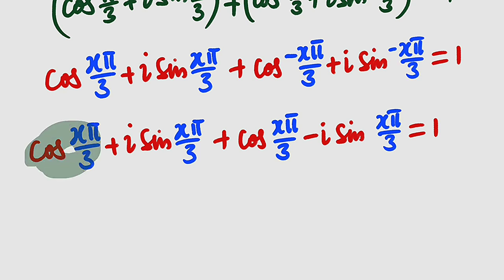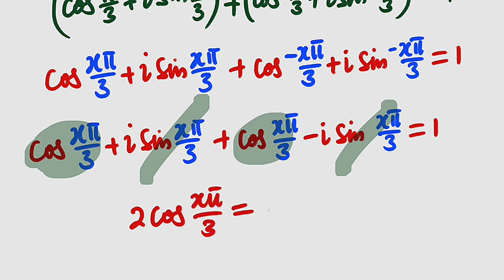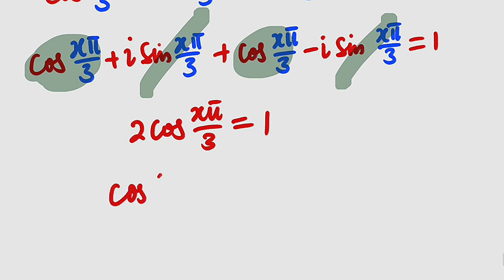We can see that the two i sine terms cancel each other, since one is negative and the other is positive. The only terms remaining are the two cosine of x pi over 3 terms. Adding them together, since they are the same, we have 2 cosine of x pi over 3 equals 1. Dividing both sides by 2, we get cosine of x pi over 3 equals 1 over 2.